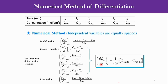The numerical method proceeds as follows. Assume we have time versus concentration data at six different points, including the initial point: t0 through t5 with corresponding concentrations Ca0 through Ca5. At each time point we have to calculate dC/dt, meaning we have to calculate it at six points.